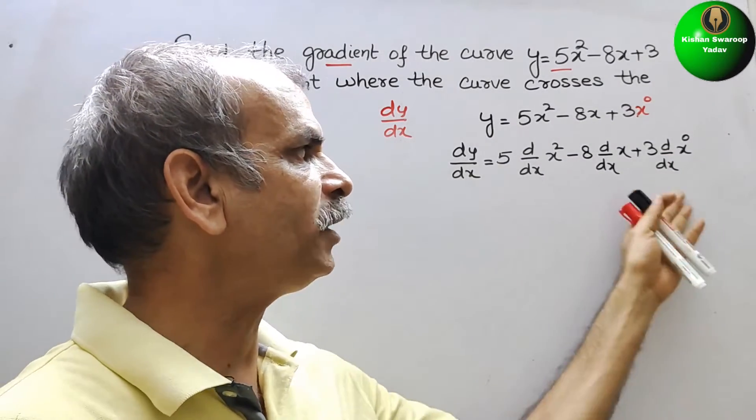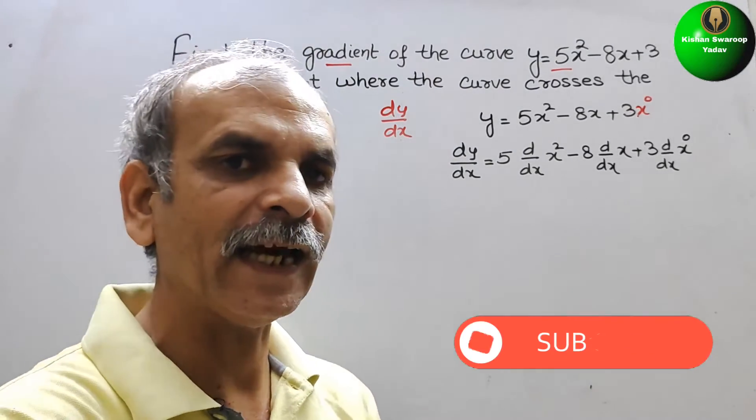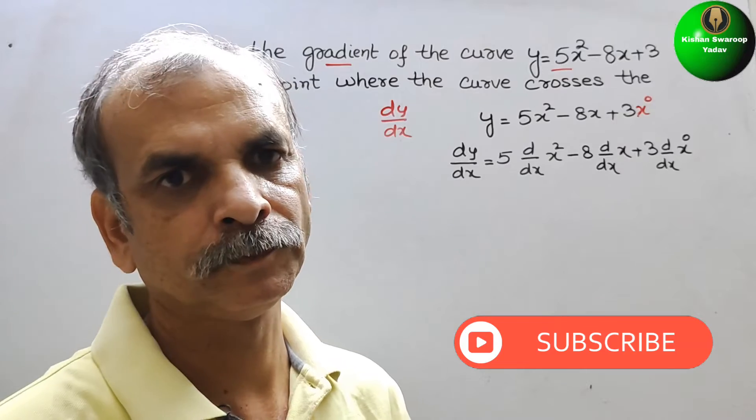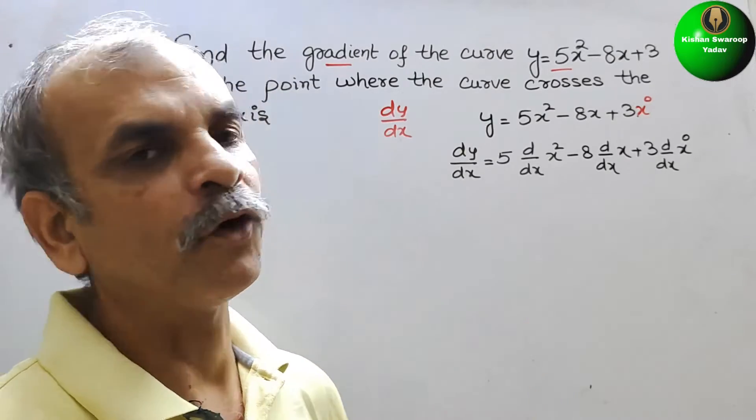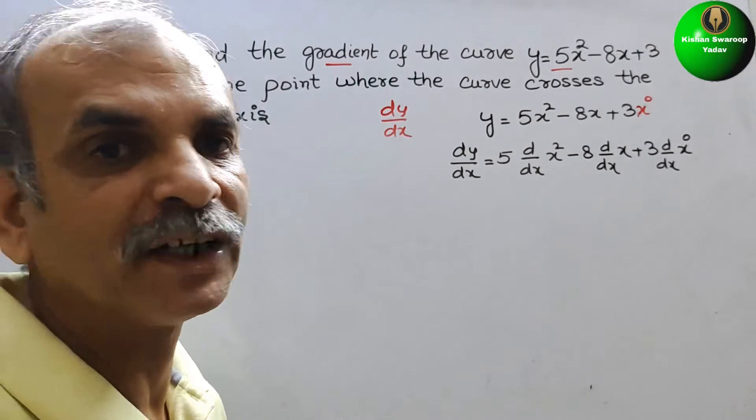This form is known as partial or you can say scalar multiple rule. Next, we will go for our power rule or you can say power function.